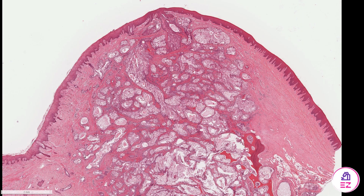Hello and welcome to Path Made Easy. Today's example is a mucoepidermoid carcinoma which has actually arisen within the mandible, which is a rare location for this tumour to arise. Nonetheless, the histology is identical to those that arise within the salivary glands where this tumour is far more common.